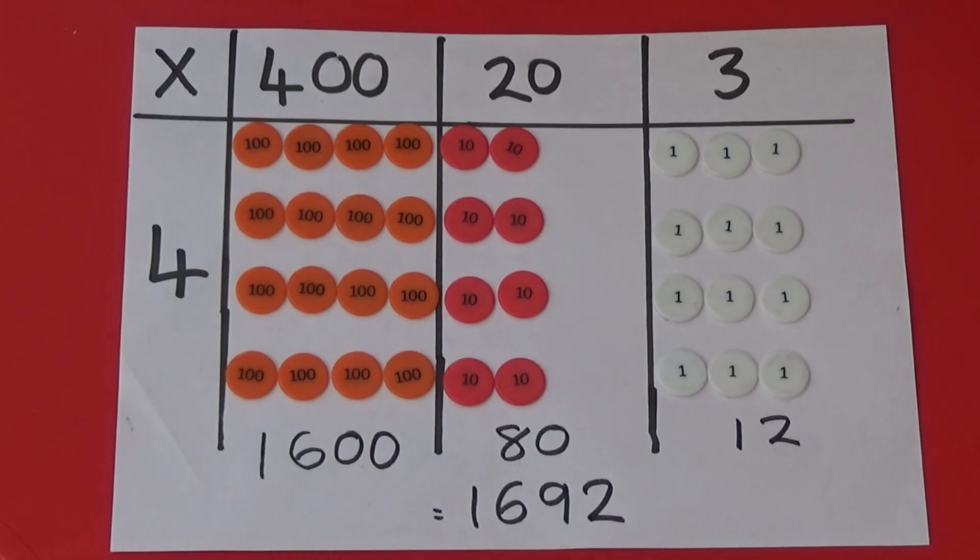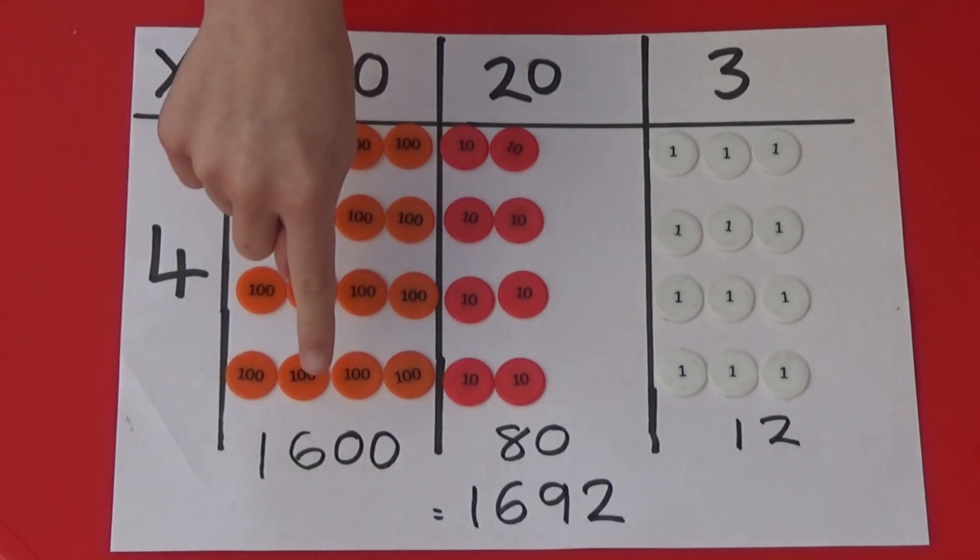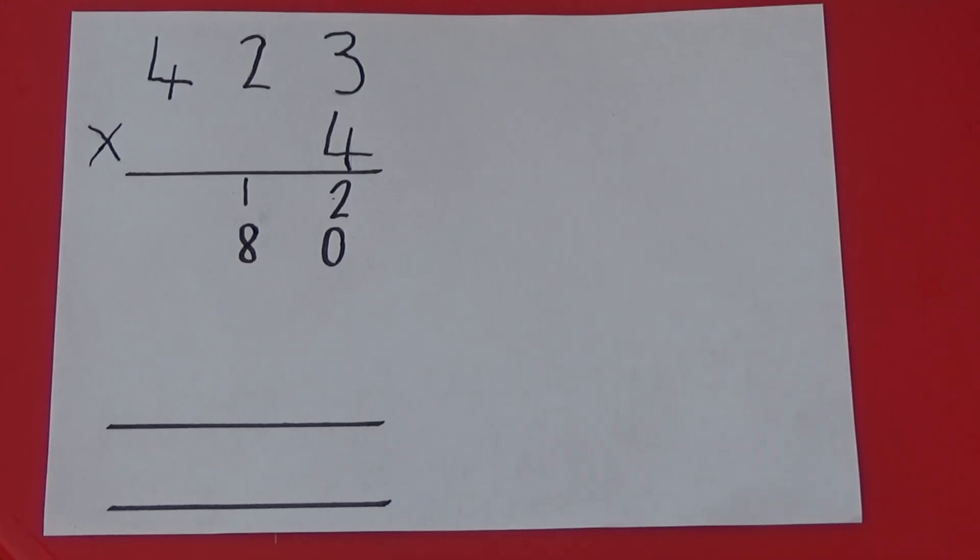Finally, if we look at 400 multiplied by 4, it equals 1,600. On here, we can see we are multiplying 400 by 4. So I'm going to write 1,600 under the 80.